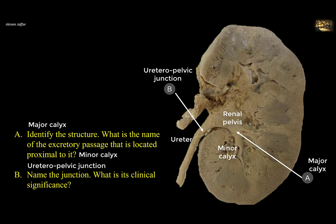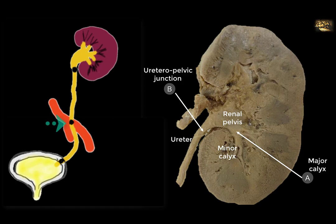The other sites of ureteric constriction are the crossing of the ureter over the external iliac vessels at the pelvic brim, and when the ureter traverses the bladder wall — the intramural segment — a short segment that pierces the wall of the bladder obliquely. This is important in preventing reflux of urine when intravesical pressure rises.